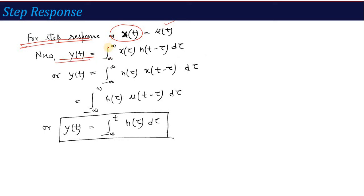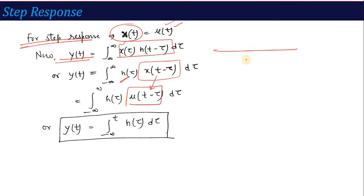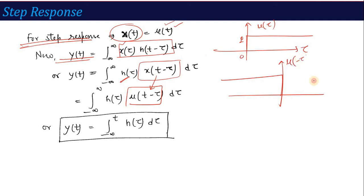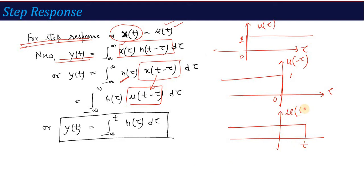The equation for y(t) is the convolution integral from minus infinity to infinity of x(τ) h(t-τ) dτ. Here x(τ) represents the unit step input, so x(τ) becomes u(τ), and h(t-τ) stays. Now, u(t-τ): first u(τ) exists for τ greater than 0, then u(-τ) is its mirror image with value 1 for τ less than 0. Shifting by t, u(t-τ) shifts to position t, so it exists from minus infinity to t.